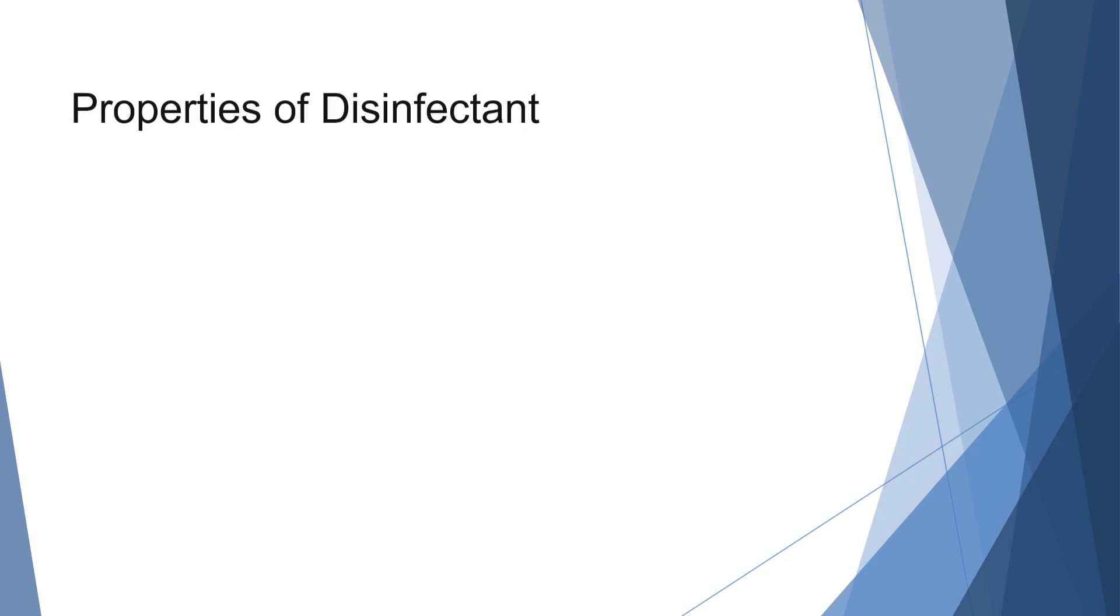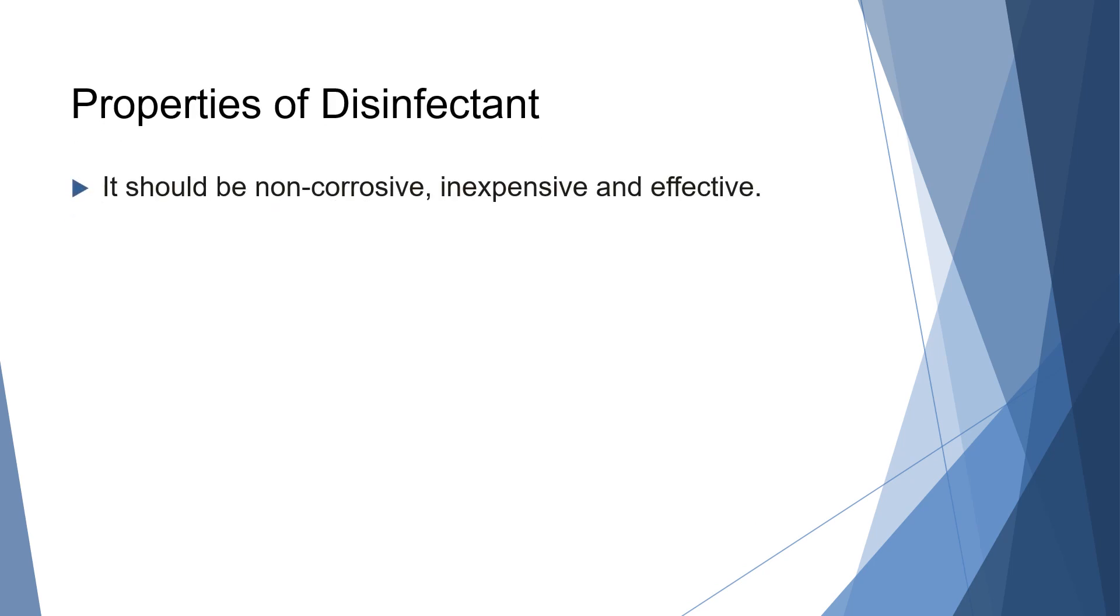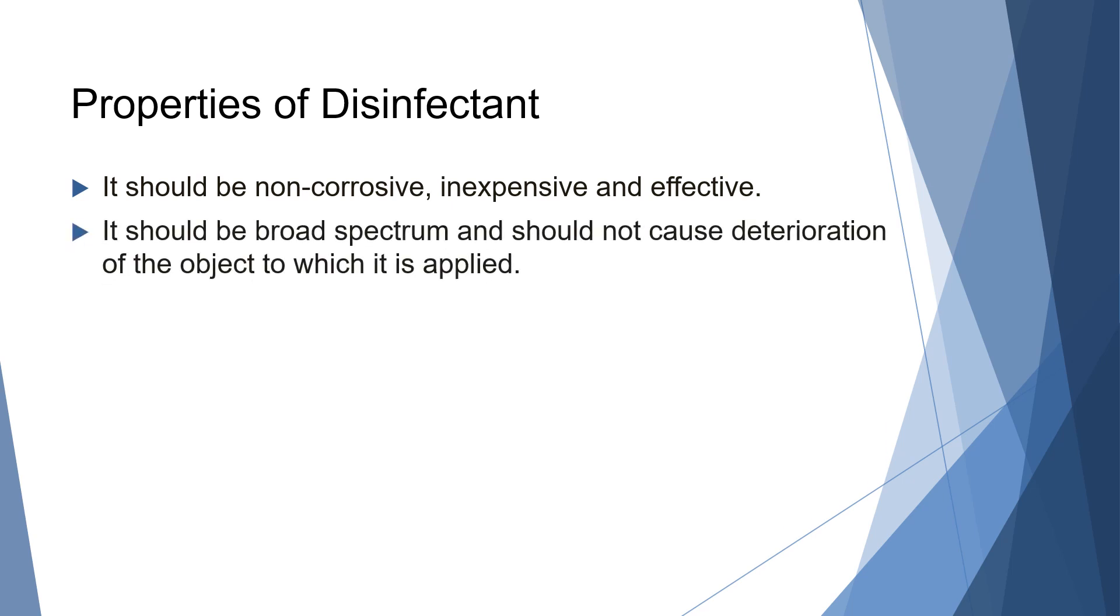Let's see some important properties of disinfectant. It should be non-corrosive, inexpensive and effective. Secondly, it should be broad spectrum and should not cause deterioration of the object to which it is applied. That is, the disinfectant should kill broad range of microorganisms without causing any harm to the surface of living and non-living things to which it is applied.